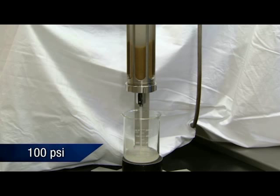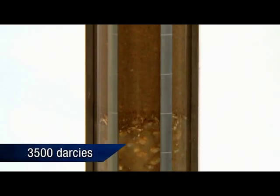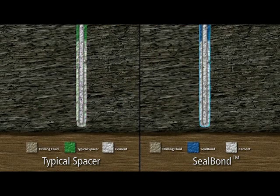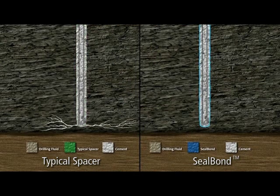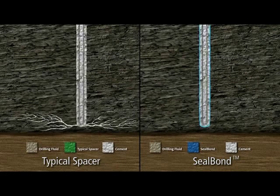Our Seal Bond and Ultra Flush micro emulsion spacer systems are extremely effective in removing oil and synthetic mud from the wellbore. The Seal Bond system seals fractures and effectively strengthens the wellbore.